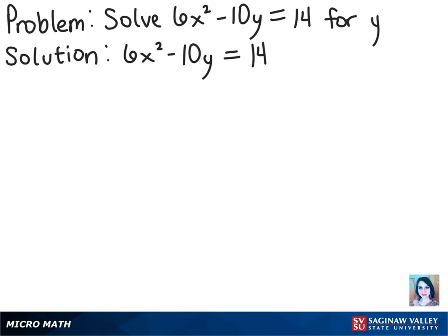The first thing we can do to solve this equation for y is subtract 6x squared from both sides. That will get us negative 10y equals 14 minus 6x squared.